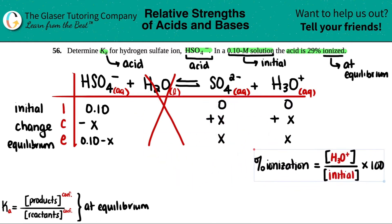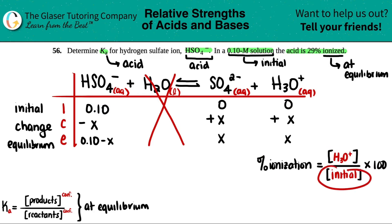The percent ionization formula is this one right here. Percent ionization equals, if we're dealing with acids, the H3O+ concentration divided by initial. Remember, a percent is just a part divided by how much you wholly started with, part divided by whole, times 100 because it's a percent. But they told me my percent was 29%, our initial concentration was 0.10. So I can actually find out what that H3O+ equilibrium value is.